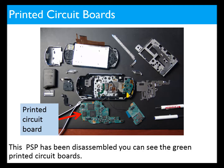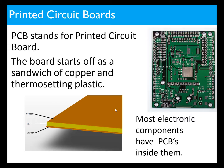Printed circuit boards are important. This PSP has been disassembled and you can see the green printed circuit boards. You need to know what printed circuit boards are and also the process in which they're manufactured. The PCB — printed circuit board — starts off as a sandwich of copper and a thermosetting plastic. Some are double-sided, some are single-sided, and then it's manufactured in a photo etching process. Most electronic components have PCBs in them.